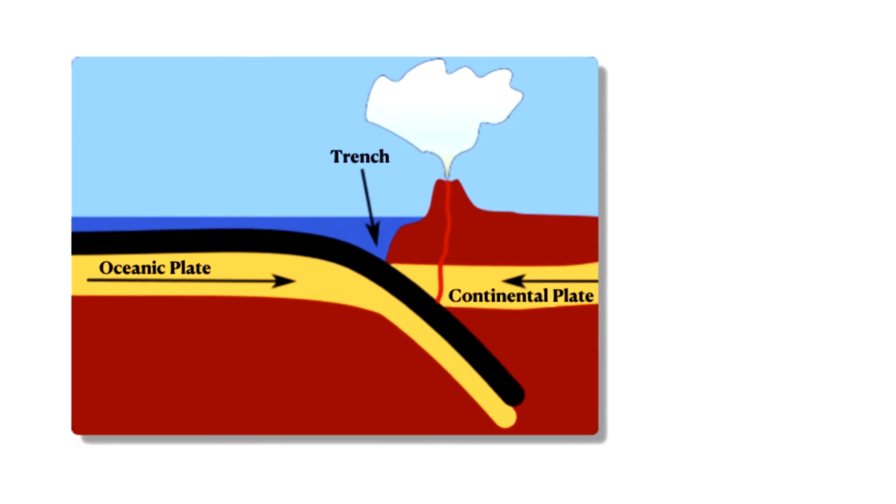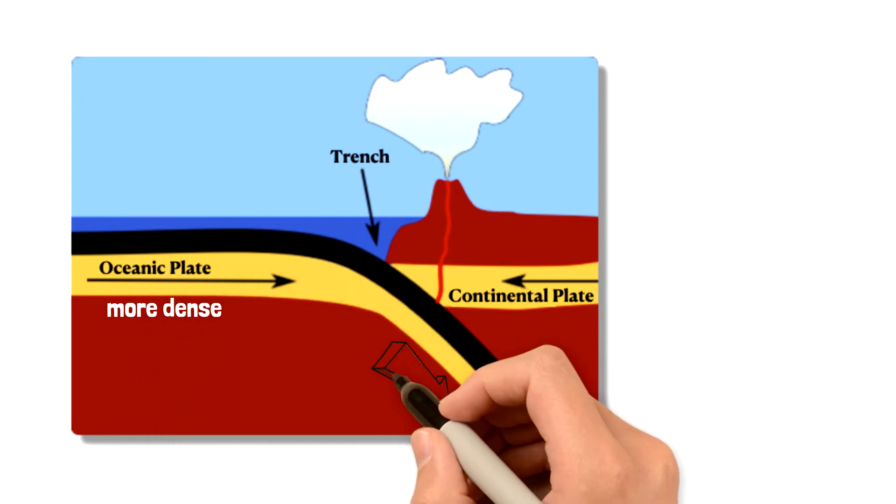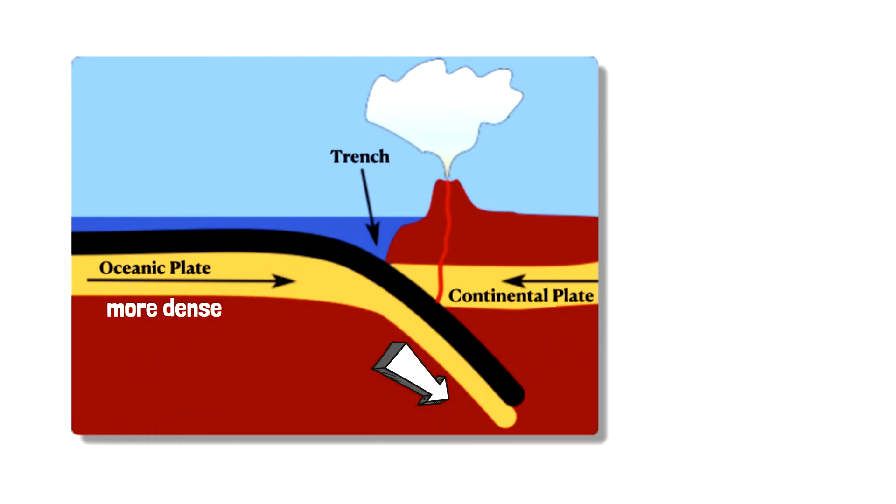When this happens, the oceanic plate, which is more dense, sinks and goes underneath the continental plate, which is less dense. When this happens, it is called subduction.